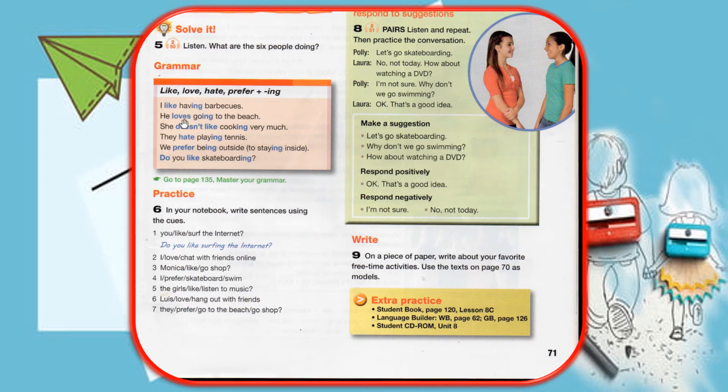He loves going to the beach. She doesn't like cooking very much. This is the negative form: the subject, the auxiliary verb doesn't, the verb like, the other verb with -ing, and the complement.